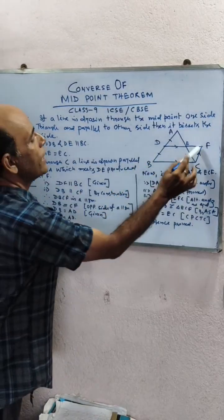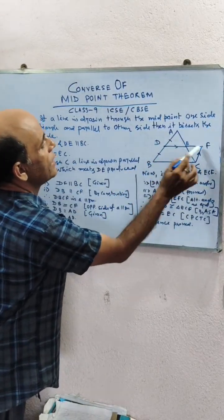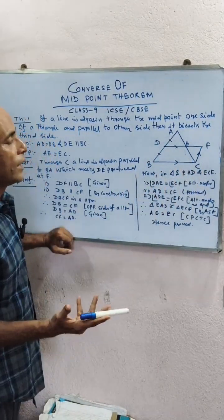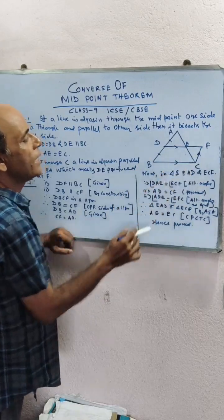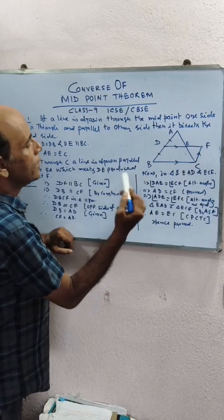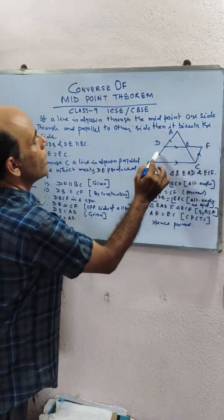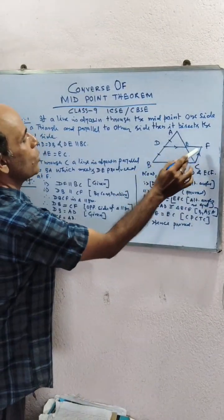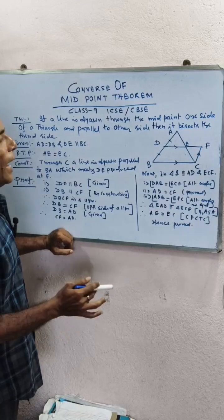Now in this quadrilateral, DF parallel to BC is given, and DB parallel to CF by construction. Therefore this is a parallelogram. Therefore DB equal to CF.